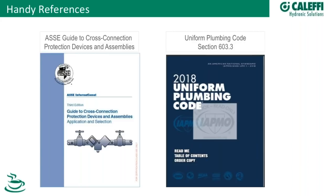It's very important for manufacturers, more so the installers, plumbers, and contractors, to know what the authority having jurisdiction is going to expect. Communication is the key, and collaboration of the manufacturers, inspectors, and plumbers working together — so that everybody ultimately puts in the approved device, the economical device, and the correct safety assembly or method.